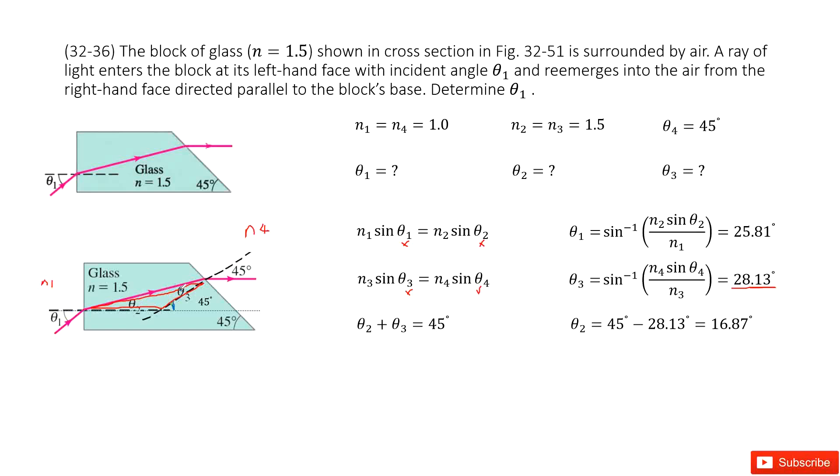For this triangle, this blue angle should equal 45 degrees. Because look at this one, this is a parallel line and this is one that cuts it. So this one is 45 degrees. And so in this triangle, we know theta 2 plus theta 3 should equal 45 degrees.